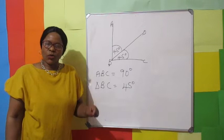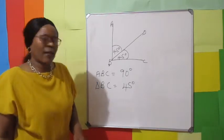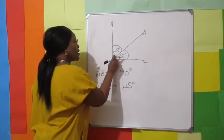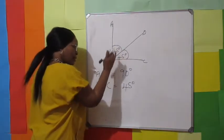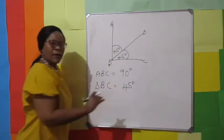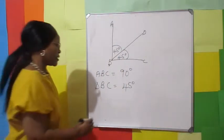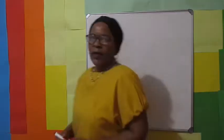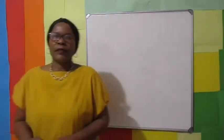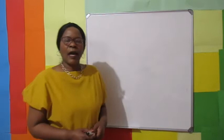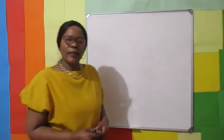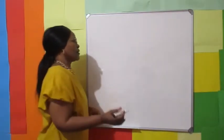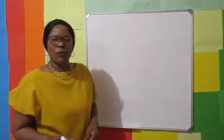An angle greater than zero but less than 90 degrees is called an acute angle.